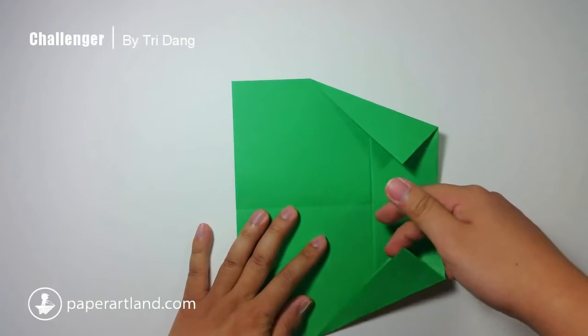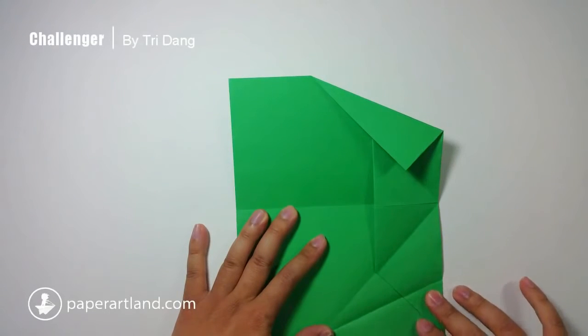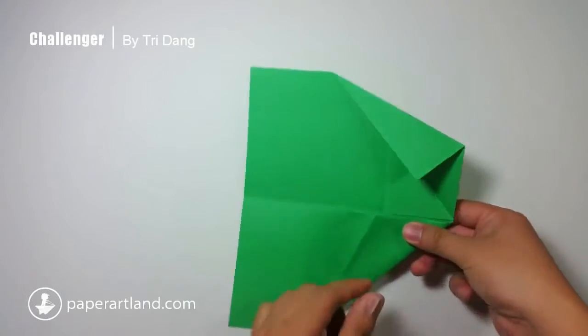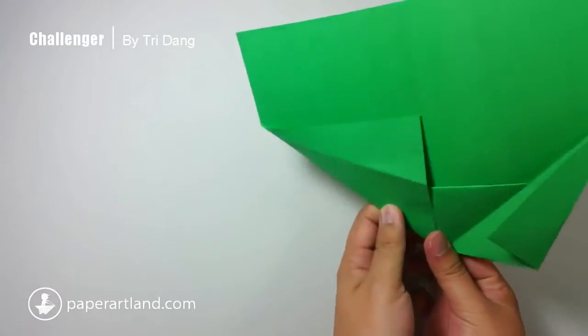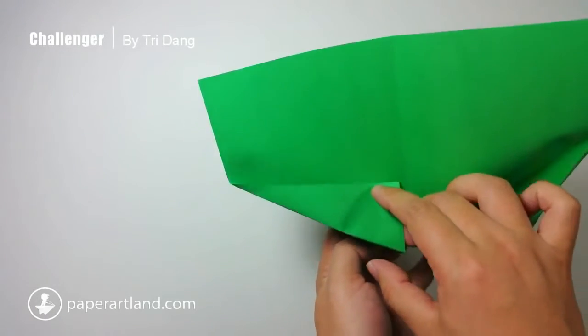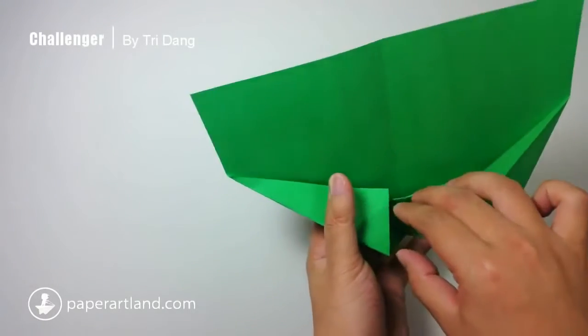Next, unfold this side of the paper again. And then, fold it straight like this. And now, I will hold the paper up, and then push this layer into the pocket right here.